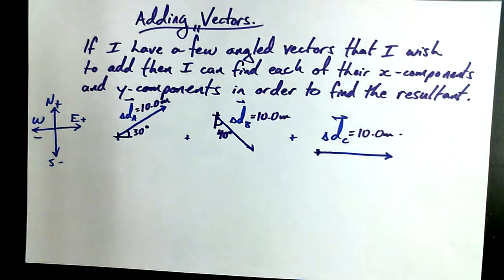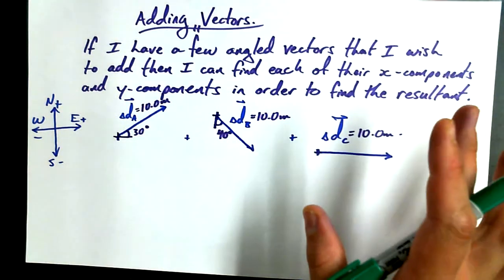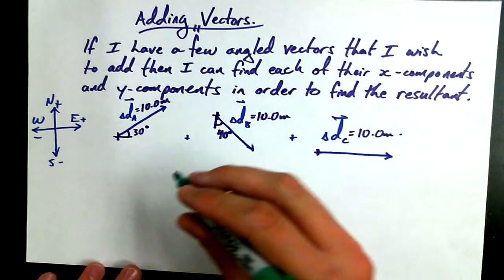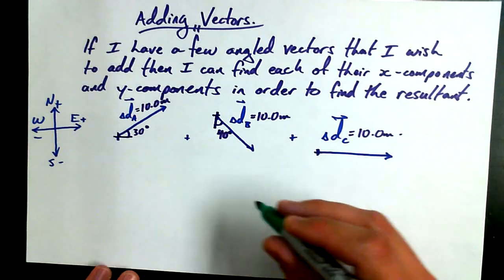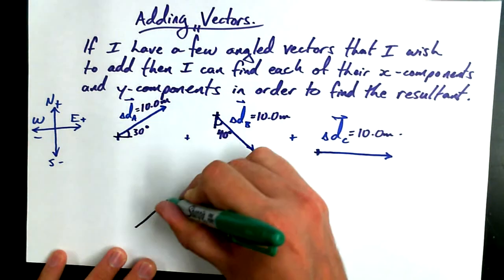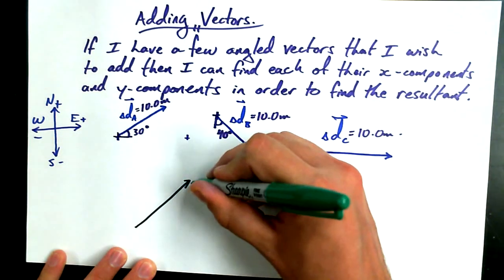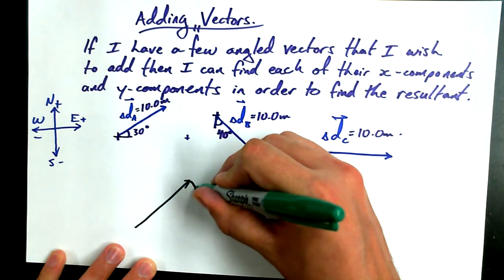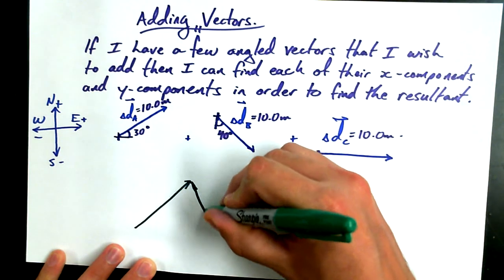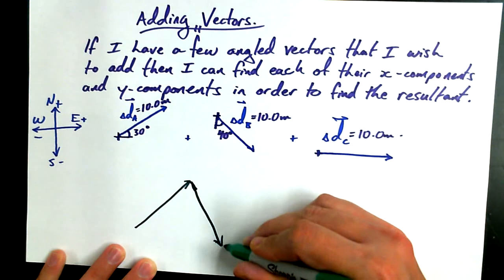Now, if I'm going to find x and y components, it's actually kind of useful to draw these guys tip to tail. Okay? So I'm going to do it sort of larger here underneath. Here's my first one. Here's my second one. And here's my third one.